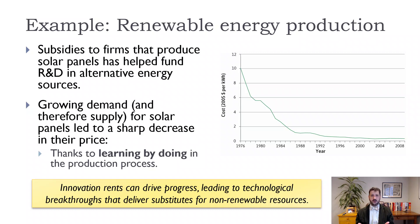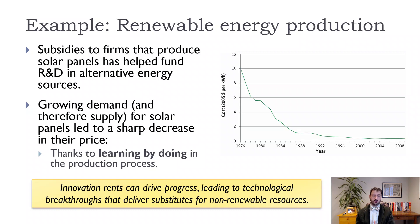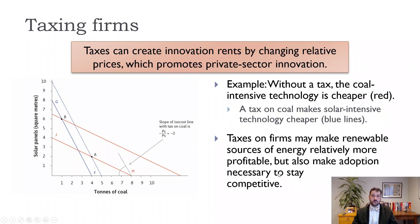This is another way the government can provide an incentive — requiring a certain number of electric cars on the road by a certain date. Some countries, like the UK and Japan, are saying they won't allow any new combustion cars to be sold after a set date. That provides an incentive for firms to get electric cars into production, learn, and make them cheaper, which is generally what happens.